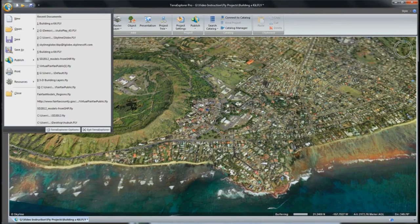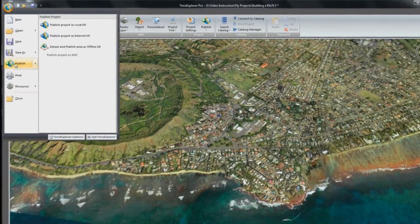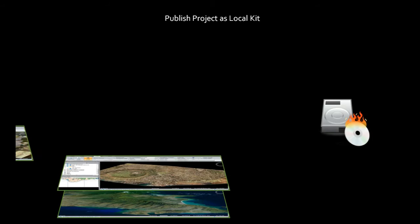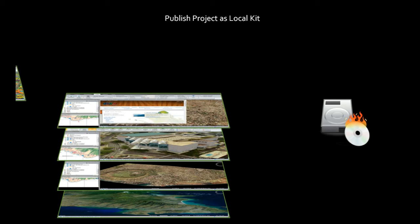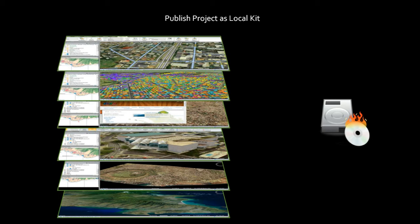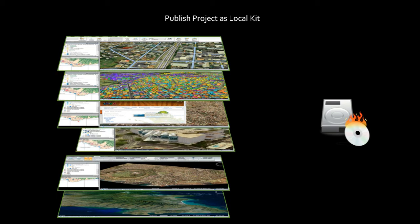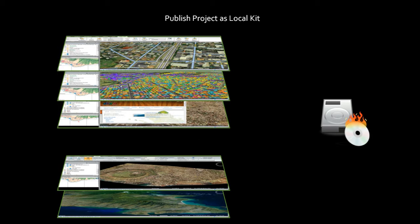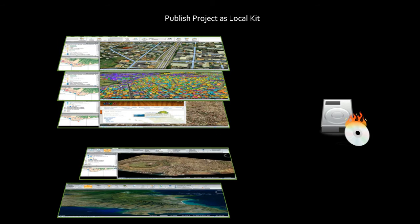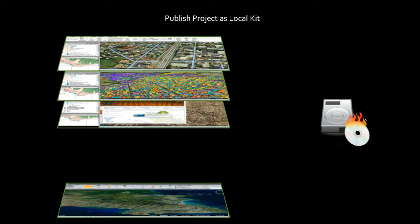There are three ways to publish a kit. The publish project as a local kit prepares the project for local distribution by gathering local files and objects such as building models and imagery layers, while maintaining references to all network resources such as feature data, HTML links, and web content.